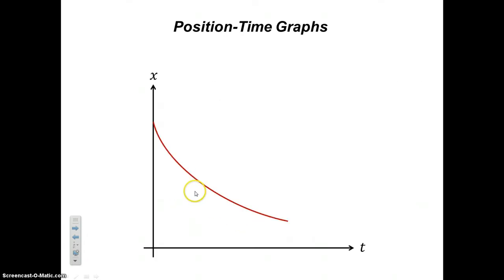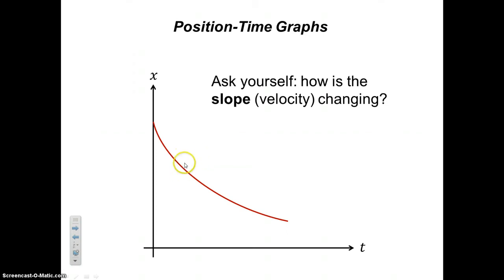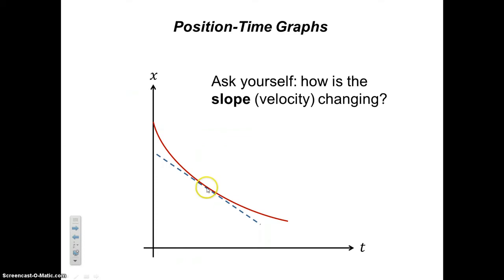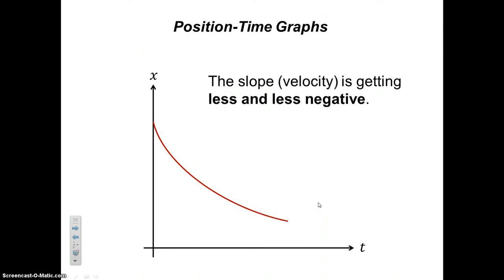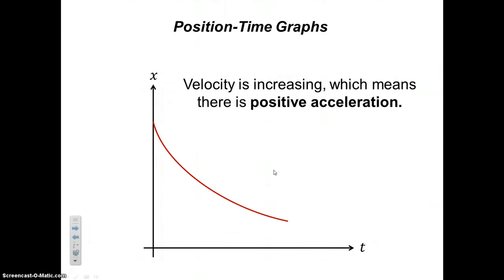What about something like this? We look at tangent lines at a point early on, then forward in time, then forward again. Early on, the tangent is clearly negative. A little later, it's still negative but not as steep. Even later, the slope is still negative but even less steep — it's getting less and less negative. That means the velocity is getting less and less negative, so the velocity is increasing, which shows positive acceleration. That's the second way positive acceleration might appear on a position-time graph.